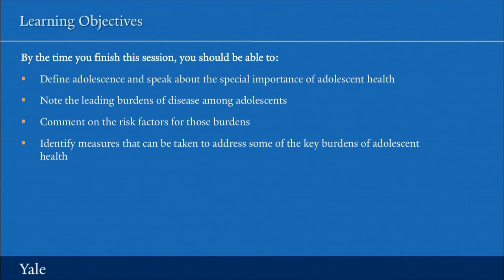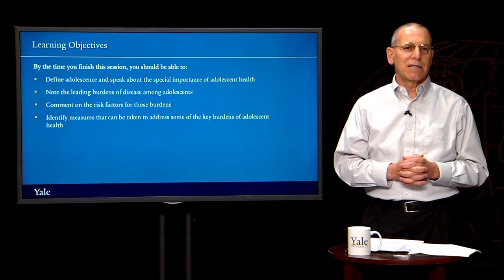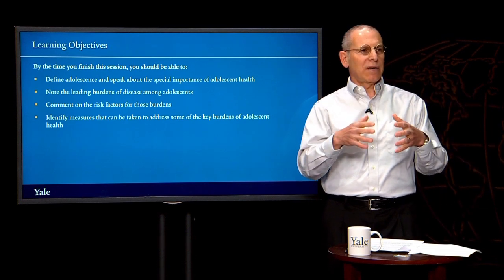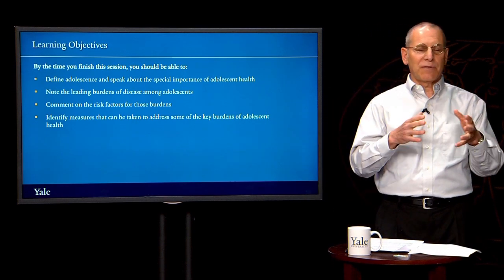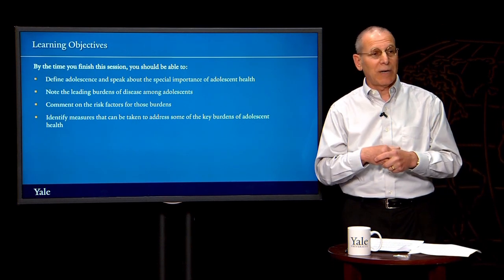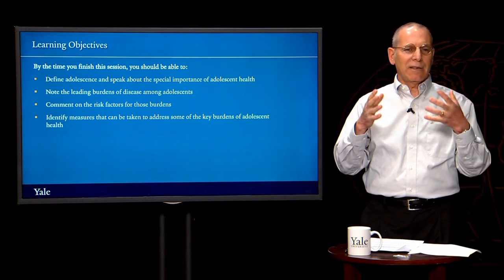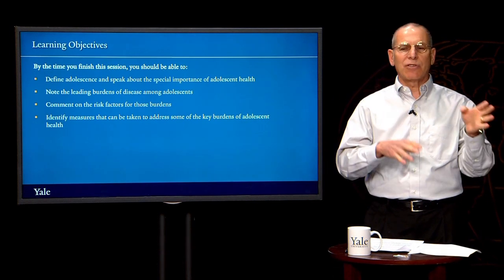Let's begin by defining adolescence. An adolescent is someone who is between ages 10 and 19. Everybody should understand that the data on adolescence is not very good. Sometimes people have data 10 to 19; some organizations have data that's 10 to 24, some have 10 to 14 and 15 to 19, which is really also helpful, as you'll see. There isn't always easily available, consistent data about 10 to 19-year-olds.